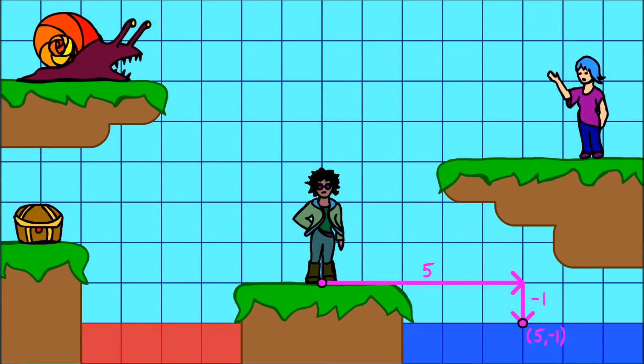Abstractly, we can think of this world as an infinitely large piece of graph paper, with a spawn point, or origin, marked.